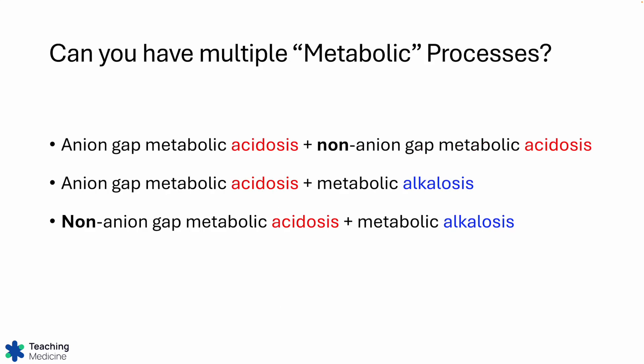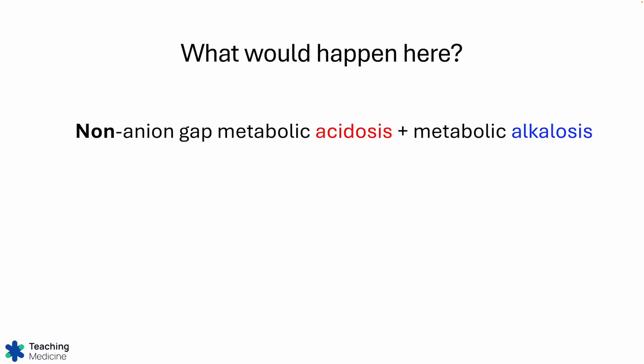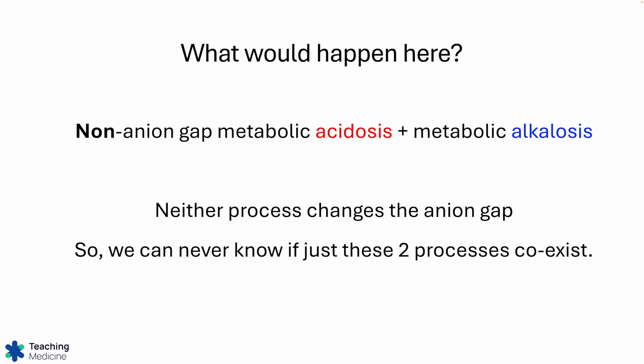For the third option — a non-anion gap metabolic acidosis coexisting with a metabolic alkalosis — there would be no change to the anion gap, because neither process impacts it. So we can never know if these two processes coexist; they literally cancel each other out and leave no footprint in the anion gap. This can happen, we just can't detect it.